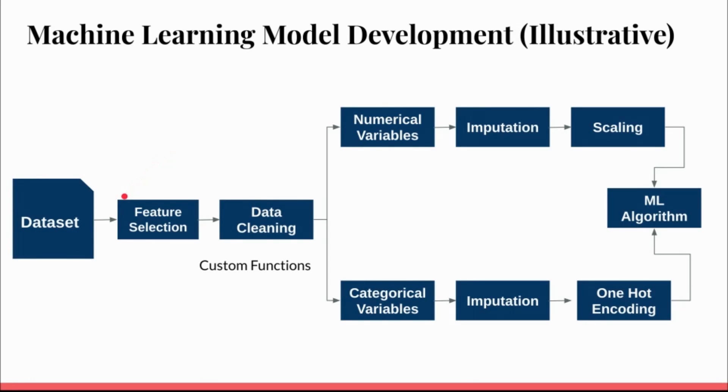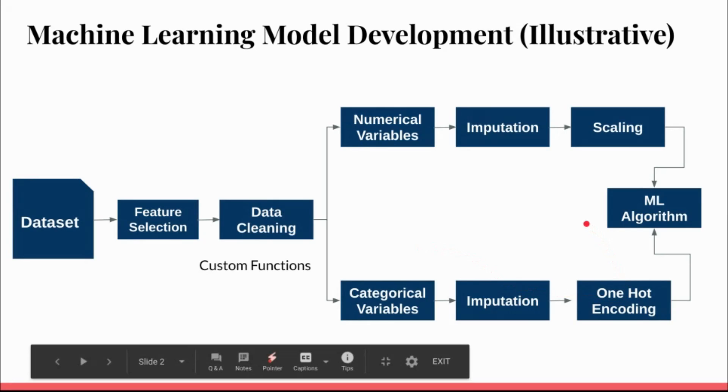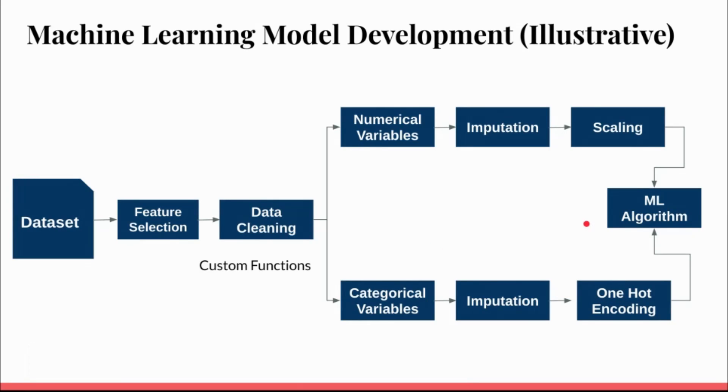In the model development cycle, there's a combination of data engineering and feature engineering activity. Typically you do some feature selection based on your domain knowledge or analysis that you did. Then you enter your data cleaning cycle. The data cleaning can be inbuilt Scikit-Learn functions or custom functions. Based on your data type, whether categorical or numerical, you do different transformations. For numerical values you do imputation and scaling. For categorical values you do imputation differently and then one-hot encoding. And finally you fit an ML algorithm to it - it can be a tree algorithm, logistic regression, or linear regression depending on the type of your problem.